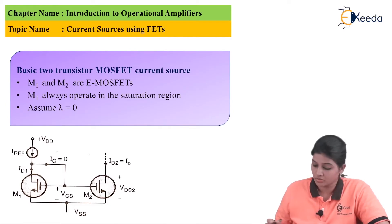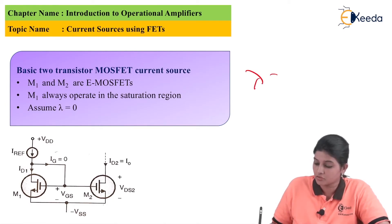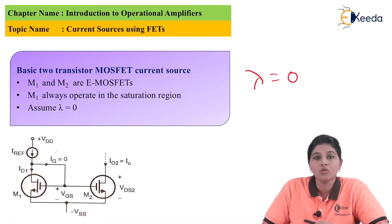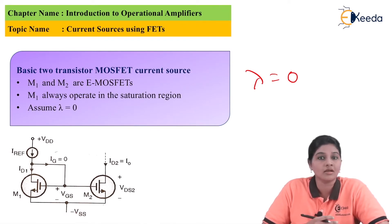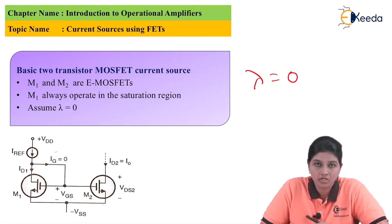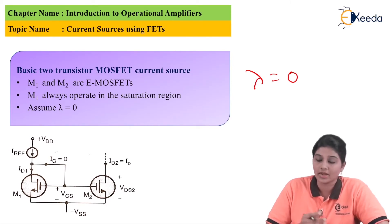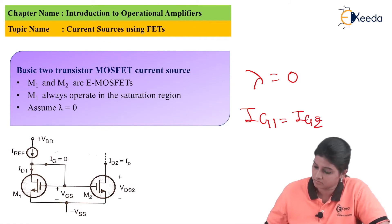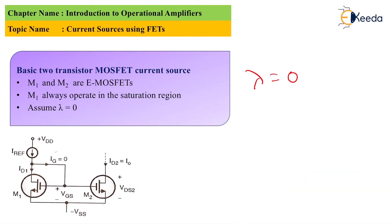We assume that the value of lambda is equal to 0. In this topic, we are also going to find the current relationship. To obtain it, we assume that the gate currents are equal to 0, that is IG1 = IG2 = 0.